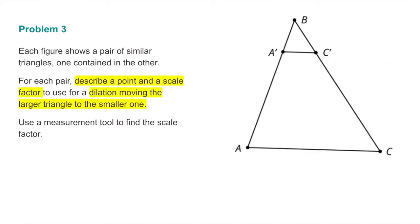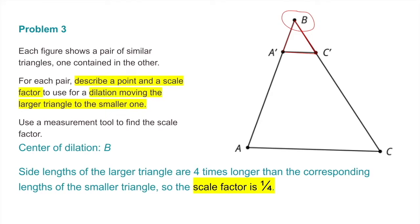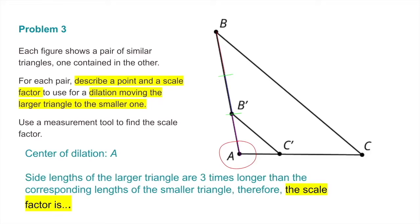Number 3. Each figure shows a pair of similar triangles, one contained in the other. For each pair, describe a point and a scale factor to use for a dilation moving the larger triangle to the smaller one. First pair: center of dilation is point B. Side lengths of the larger triangle are four times longer than the corresponding lengths of the smaller triangle, so the scale factor is one-fourth. Second pair: the center of dilation is point A. The side lengths of the larger triangle are three times longer, so the scale factor is one-third.